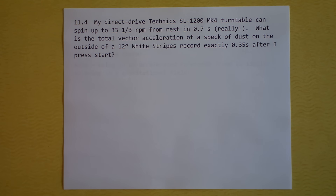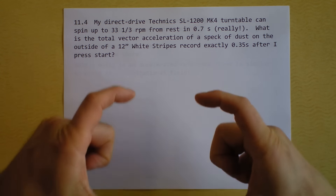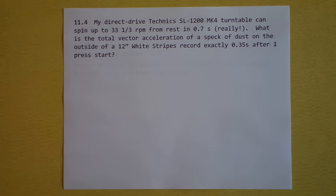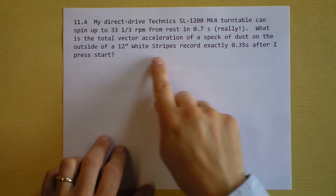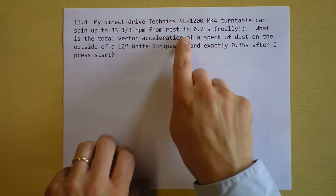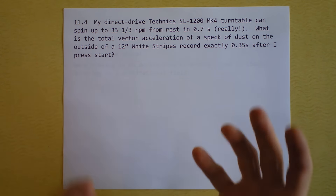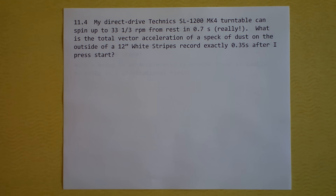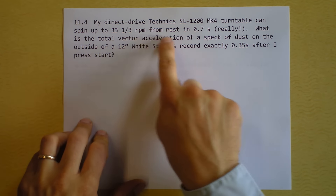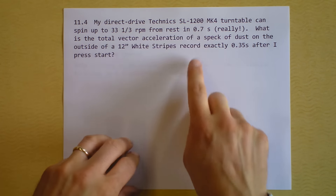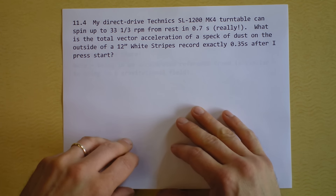Question four is about my turntable — it is direct drive, not a belt drive. It has a very powerful motor on the axis of the turntable that can get it up to speed in less than one second. You're looking for the total vector acceleration of a speck of dust on the outside of a 12-inch record exactly half of the time that it's spent speeding up. You can make some cool simplifications at half of the time. We're going to assume that the acceleration is steady during this 0.7 seconds, so that we can know what's happening at half of the time.